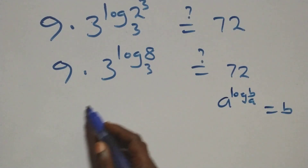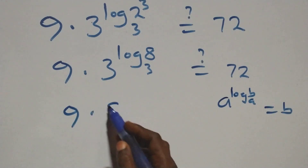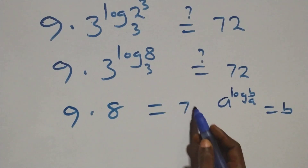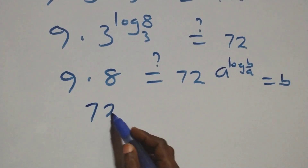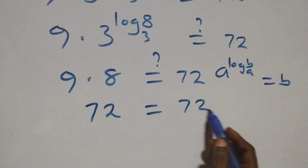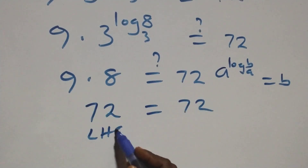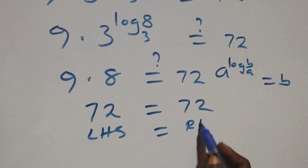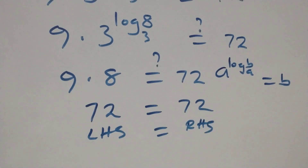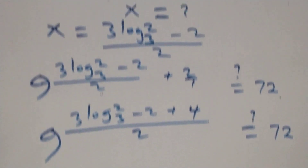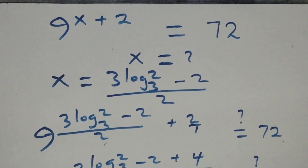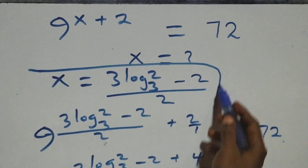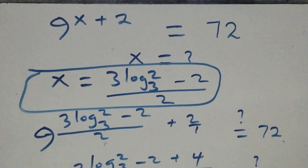And here, that is nine times eight — is it equals 72 on this side? Of course, nine times eight gives us 72, which equals 72. The left-hand side equals the right-hand side, and therefore we conclude that x equals 3 log 2 base 3 minus 2, all over 2, satisfies this given problem.